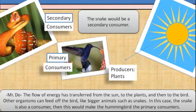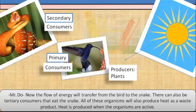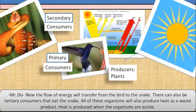Now the flow of energy will transfer from the bird to the snake. There can also be tertiary consumers that eat a snake. All of these organisms will also produce heat as a waste product. Heat is produced when the organisms are active.